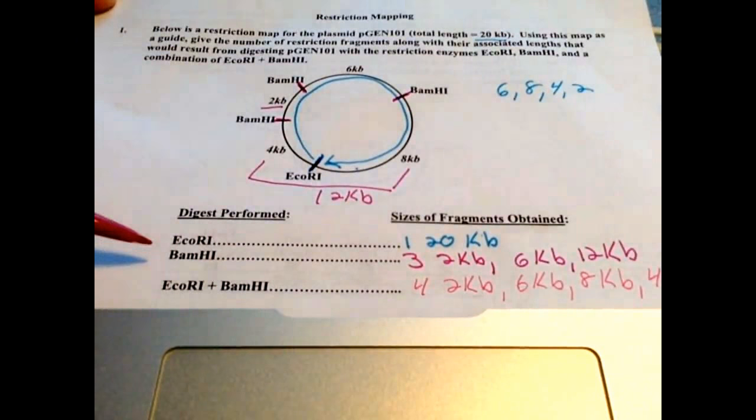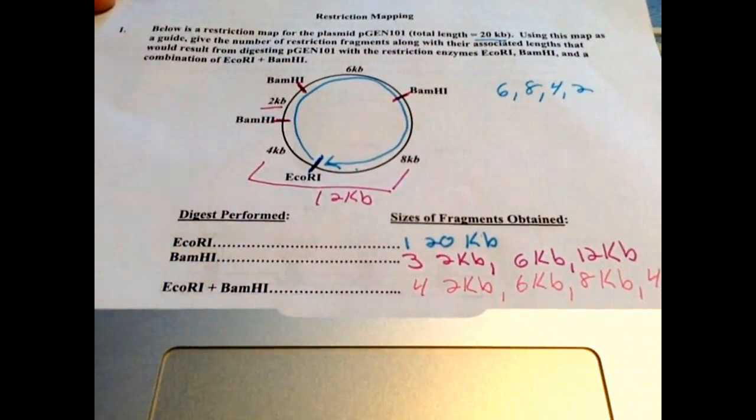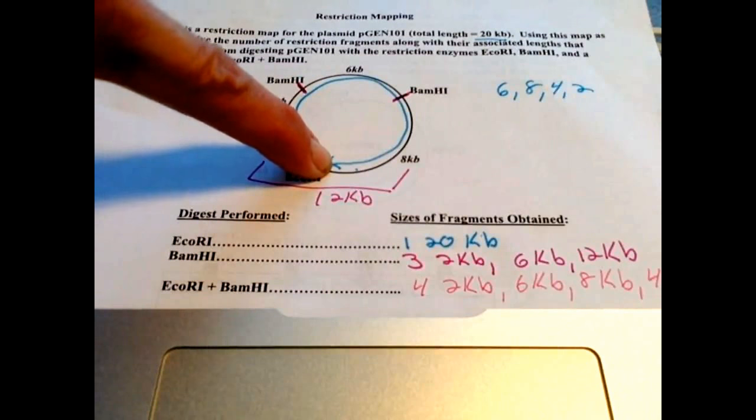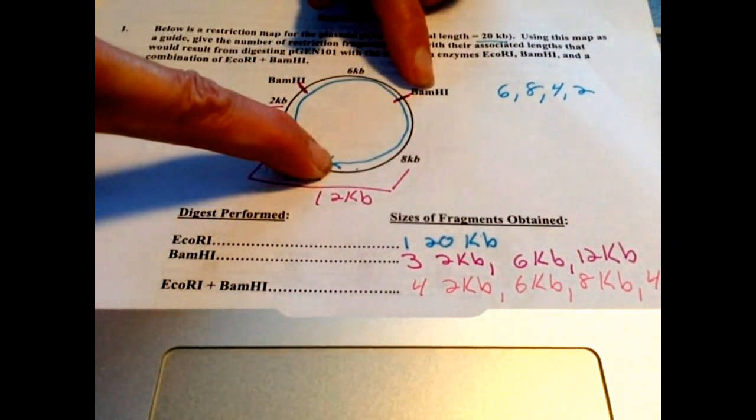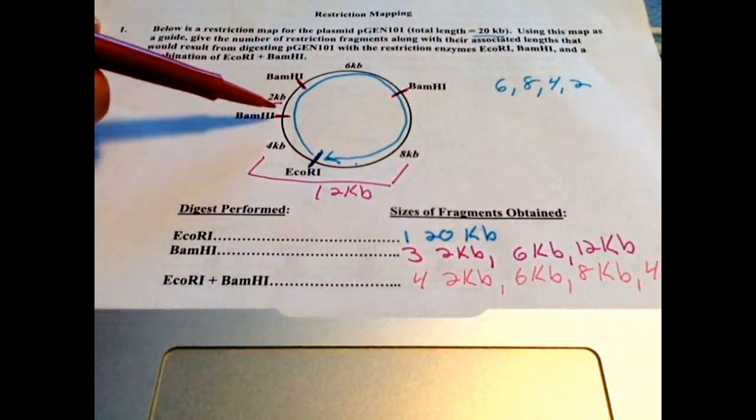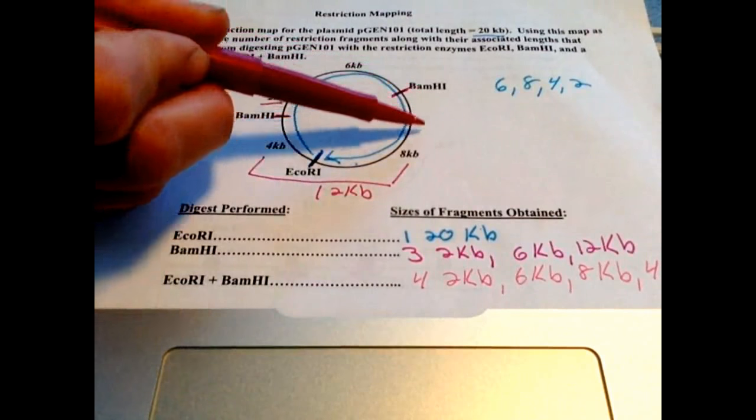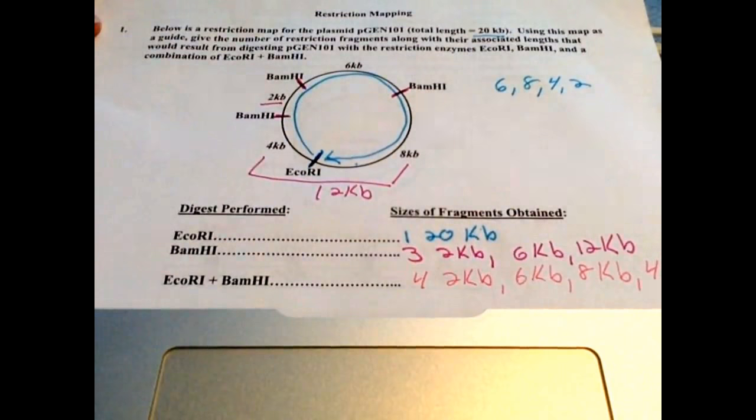So ECOR1 makes a single fragment of the length of 20 kilobases. Now if BAMH3 was used, if this is a single digest, that's the only enzyme used. So this enzyme cut was not made. So you would have only 1, 2, 3 fragments made. So BAM by itself in a single digest would make a 2 kilobase, a 6 kilobase, and 8 plus 4, a 12 kilobase fragment.